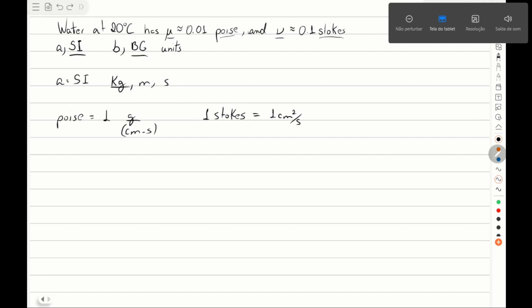So let's try this example. Water at 20 degrees Celsius has an absolute viscosity μ = 0.01 Poise.